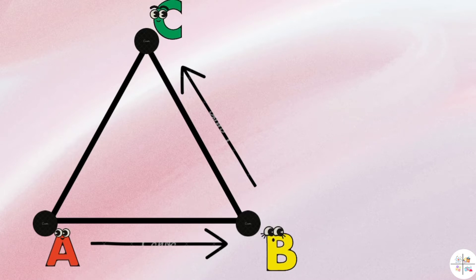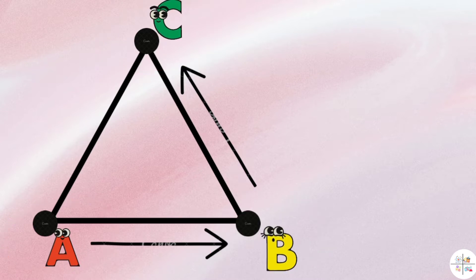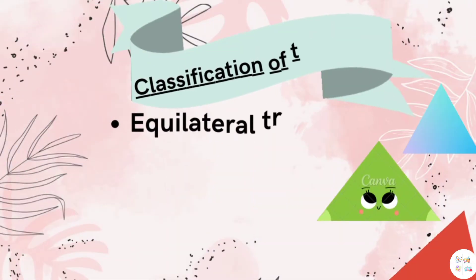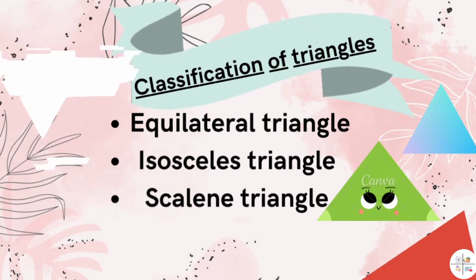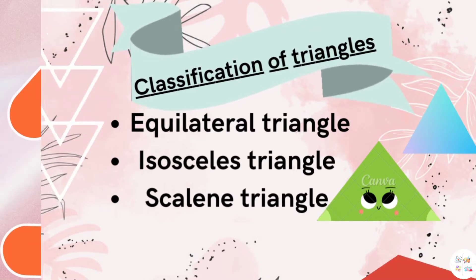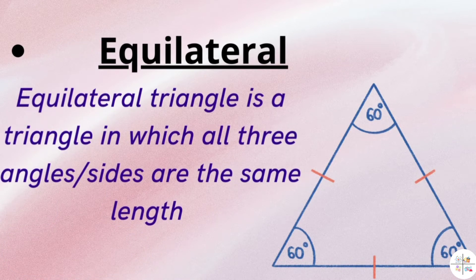The points A, B, and C are called the vertices of the triangle. Classification of triangles: there are three types of triangles: equilateral, isosceles, and scalene.